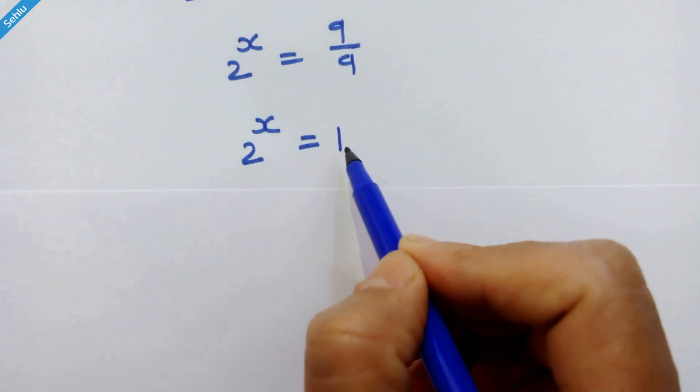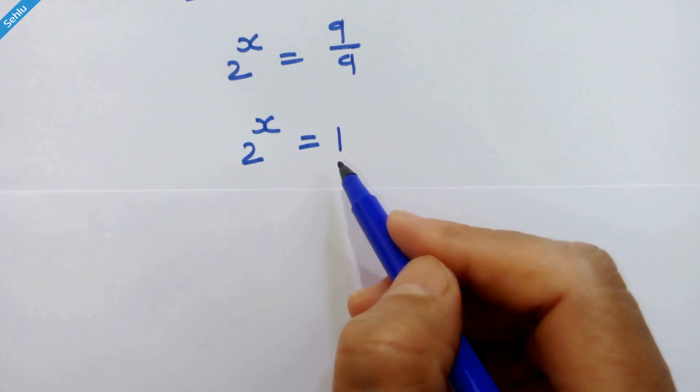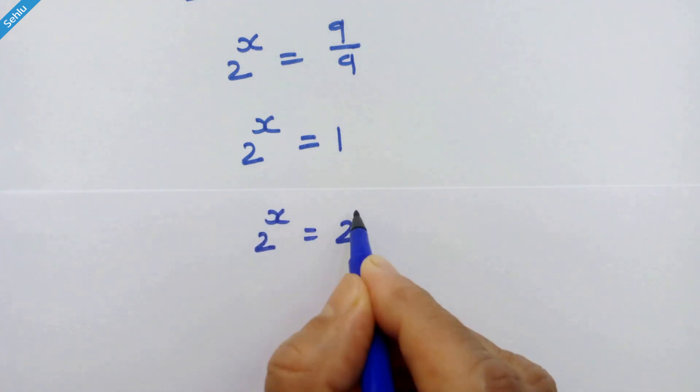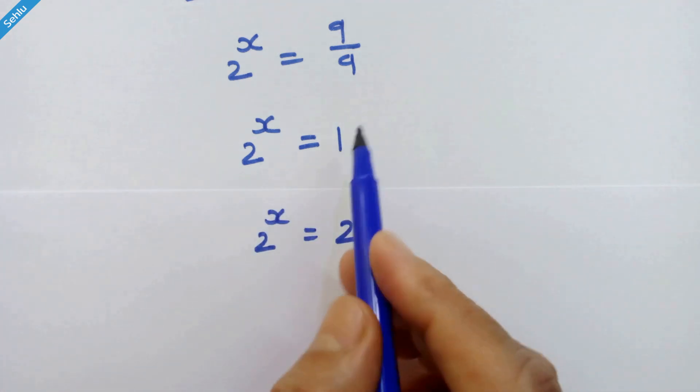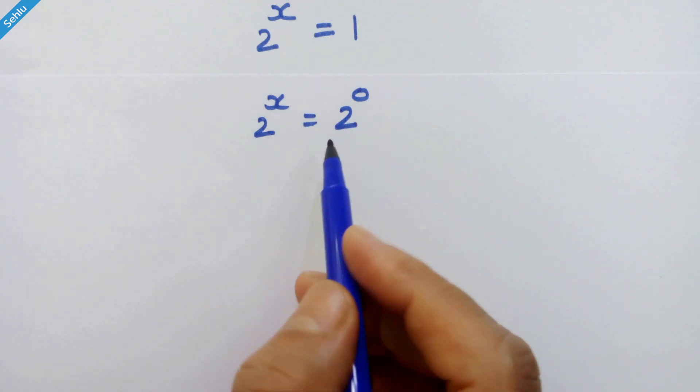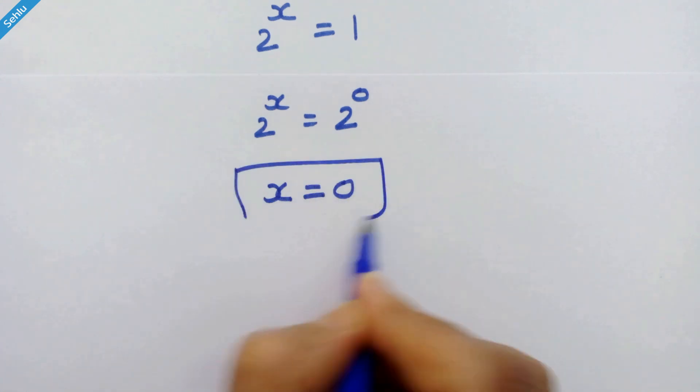Now 1 can be result of any number who has 0 as an exponent. So let's take 2 raised to 0 instead of 1. We have got same base both the side so we can equate their exponents. So x is equal to 0 and that's the answer.